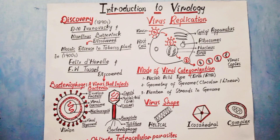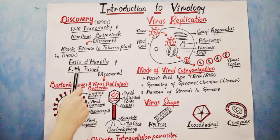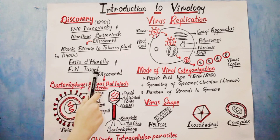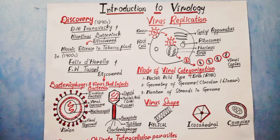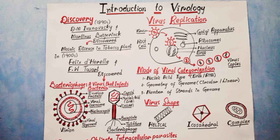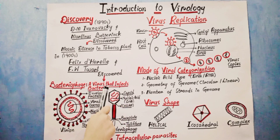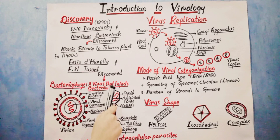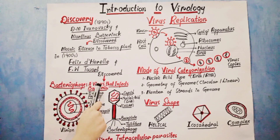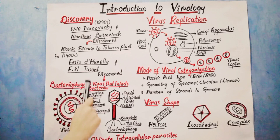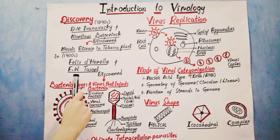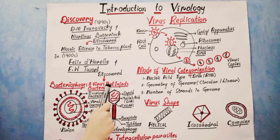So scientists termed that infectious agent a virus, which comes from a Latin word meaning poison. About ten years later, two other scientists — Felix d'Hérelle and F.W. Twort — discovered the same type of infectious agent, but this one was a virus that infects bacteria only.